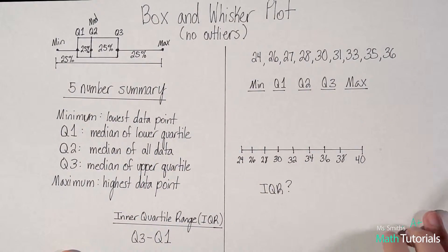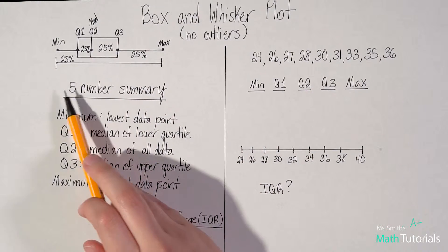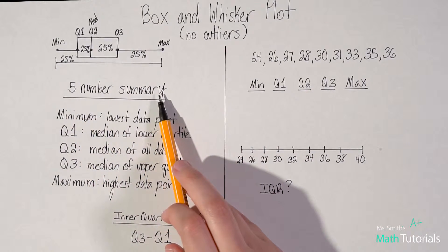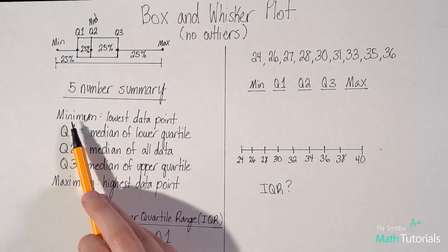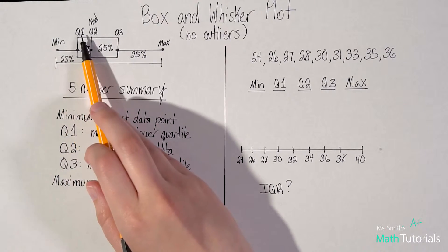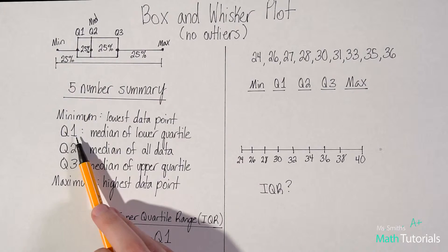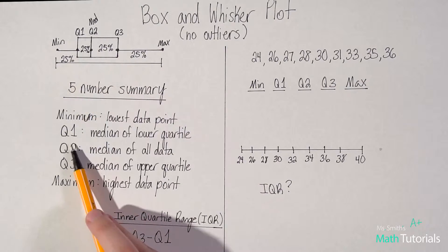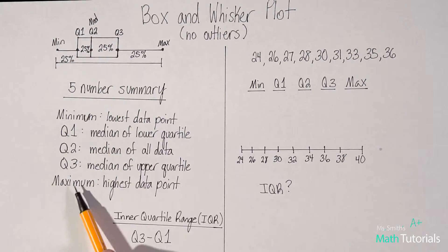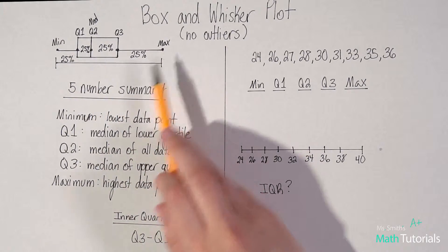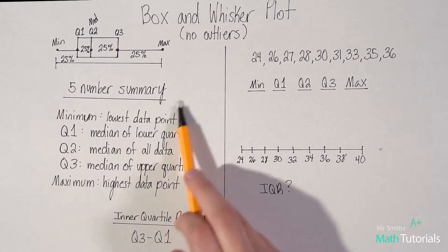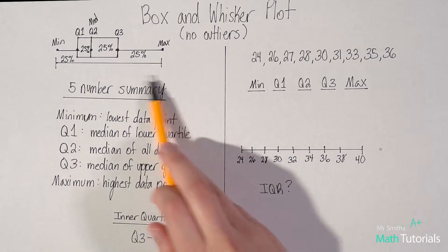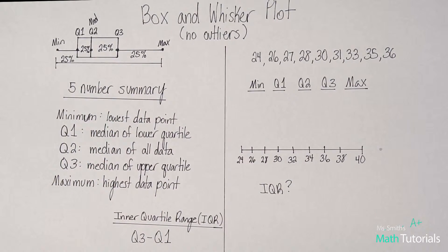We need to know about our five number summary — that is these five things: your minimum, your Q1, your Q2, your Q3, and your maximum. That makes up your five number summary, and you have to have this to create the box and whisker plot.